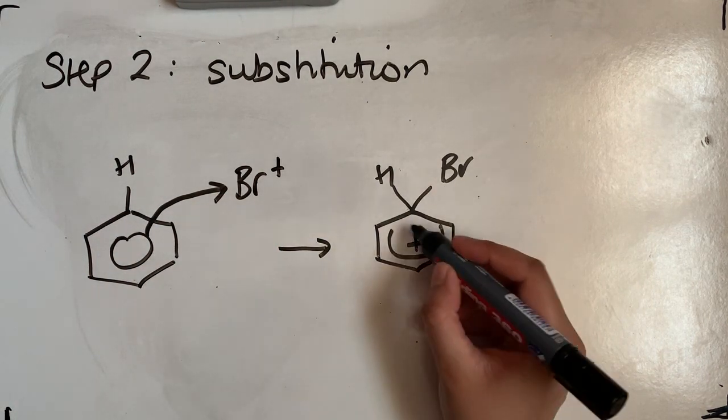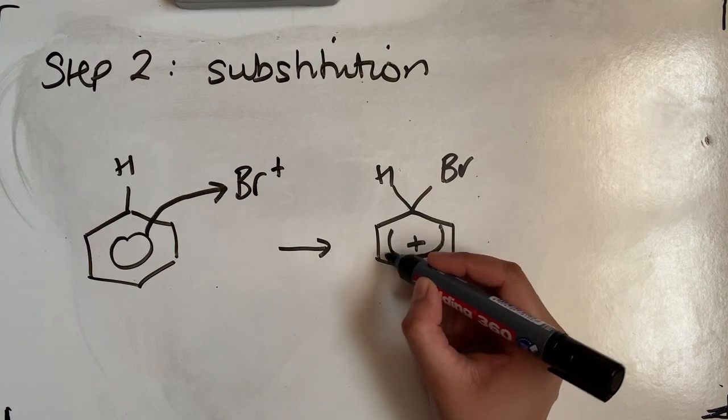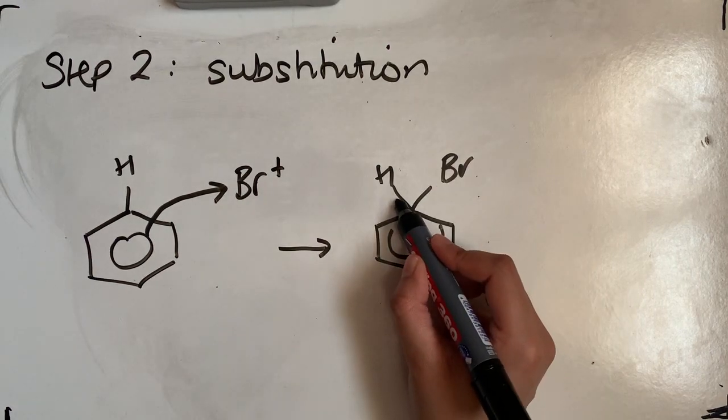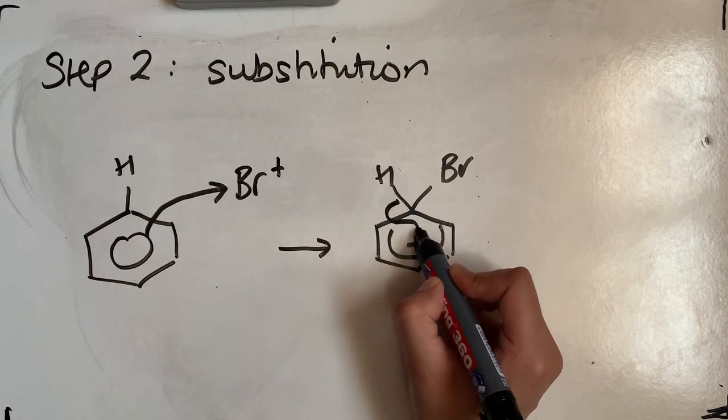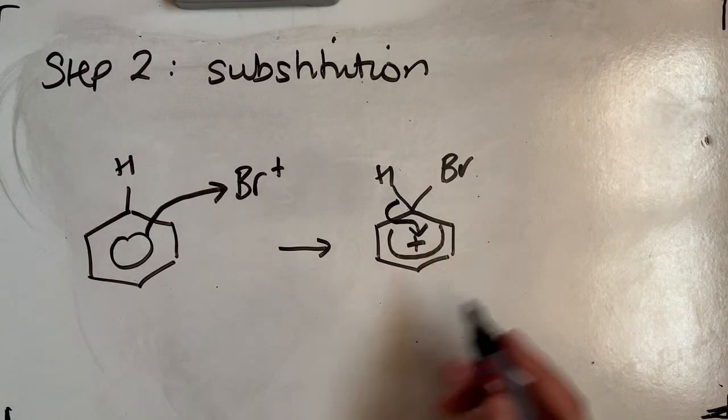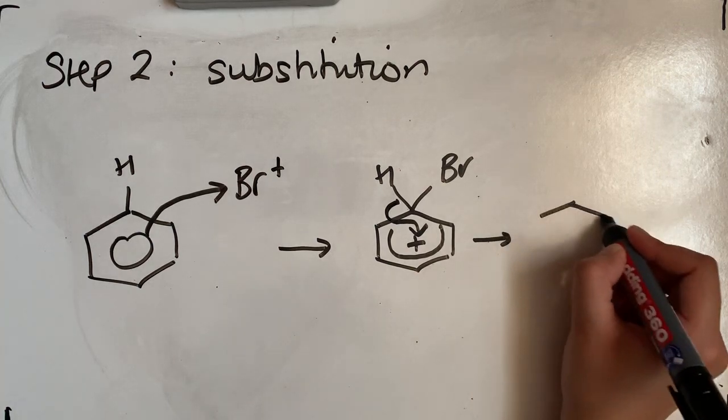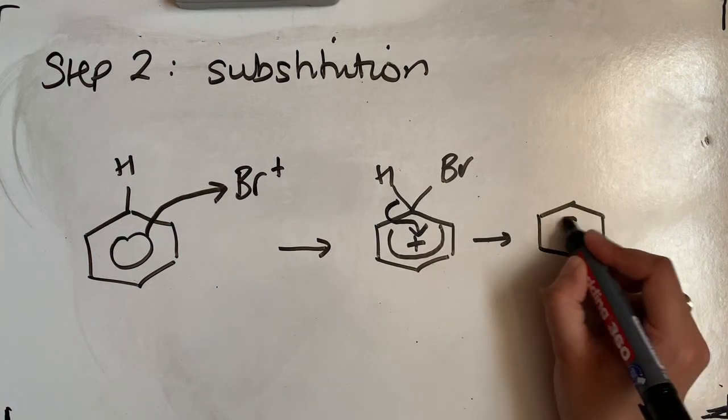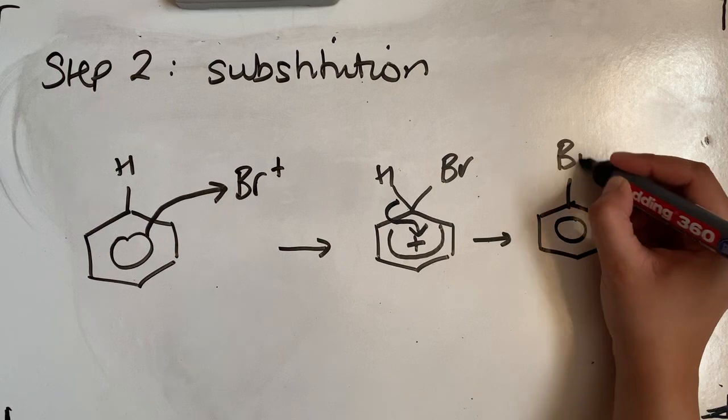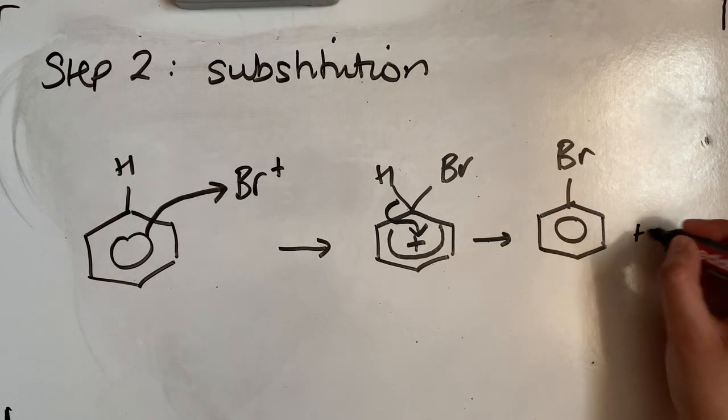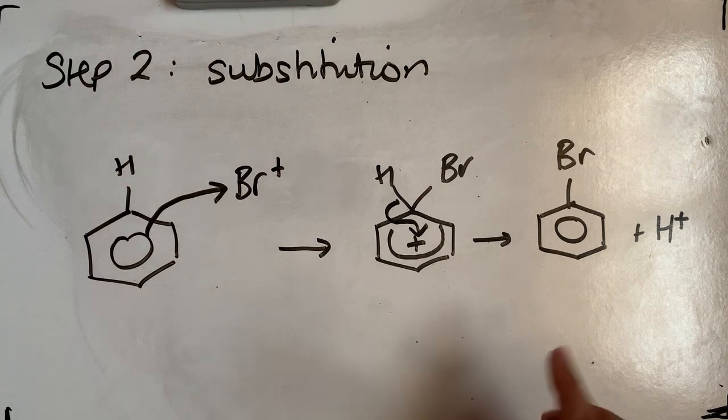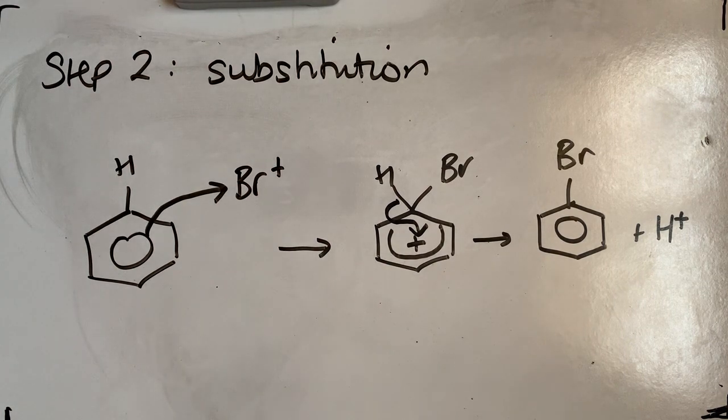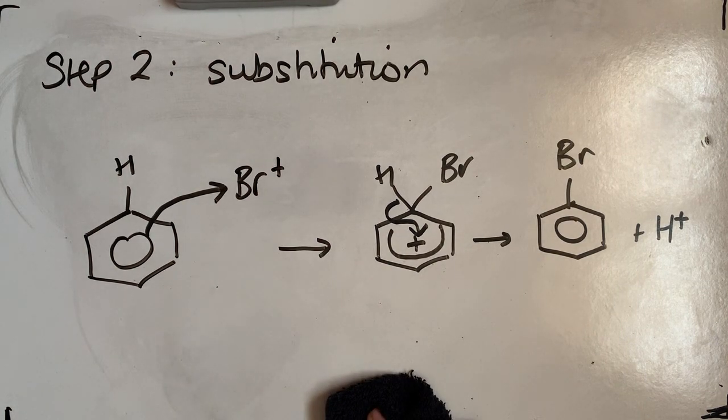We want to now reform that delocalized ring in the middle. It does that by taking the electrons from the carbon-hydrogen bond, so curly arrow going back into the ring there, and that's going to form our bromobenzene, and it's also formed H-plus. So we formed our product over there.